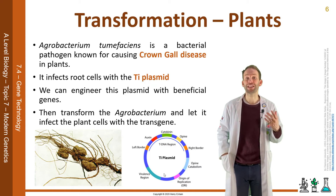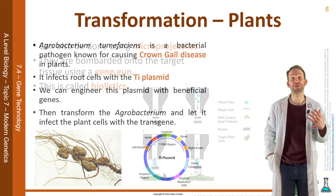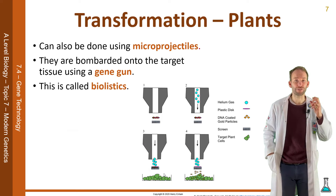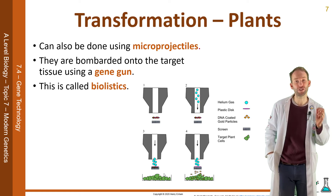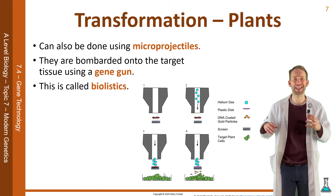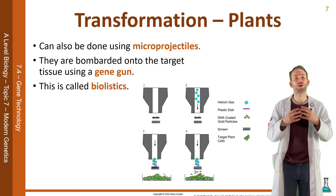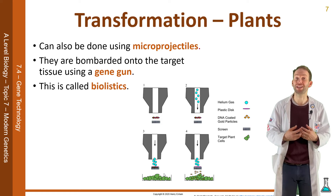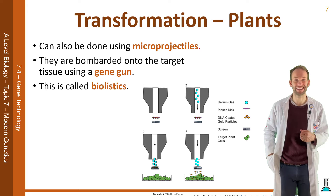You can also transform plants simply using microprojectiles. The foreign genes that need to be transferred are coated onto the surface of minute gold or tungsten particles and then bombarded onto the target tissue or cells using something called a gene gun. This method is known as biolistics.